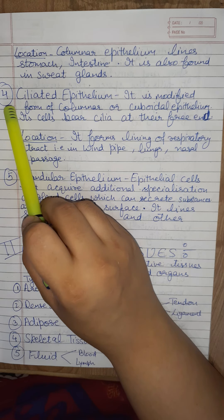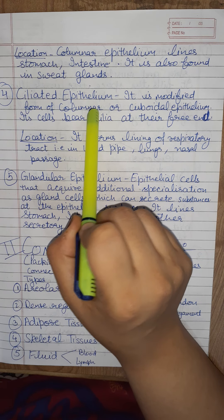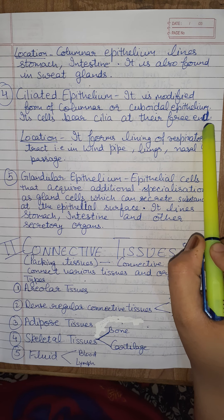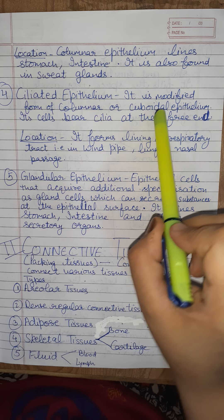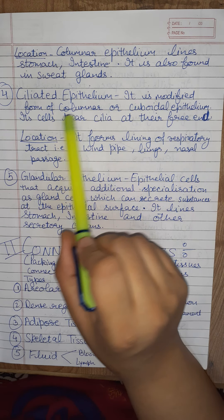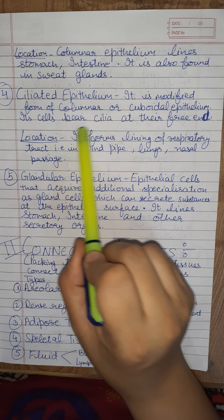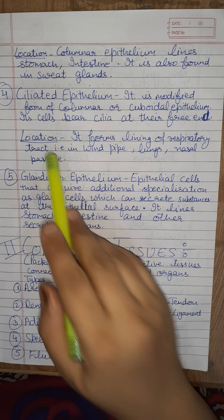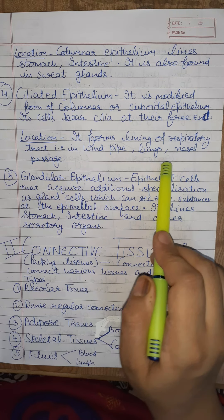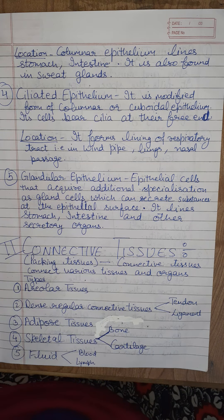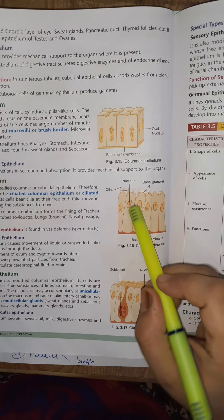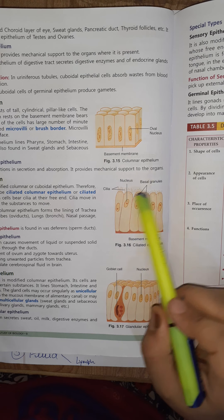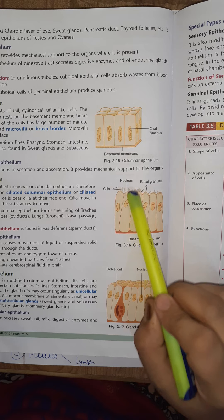The fourth category is ciliated epithelium, which is a modified form of columnar or cuboidal epithelium. Its cells bear cilia at their free end — hence we name them ciliated columnar epithelium or ciliated cuboidal epithelium. It forms the lining of the respiratory tract: the windpipe, lungs, nasal passage, etc. In this diagram you can see the cilia, which are hair-like structures present at the surface.